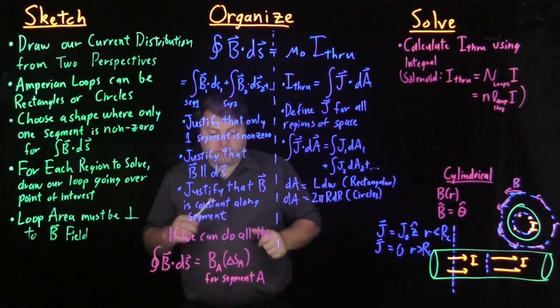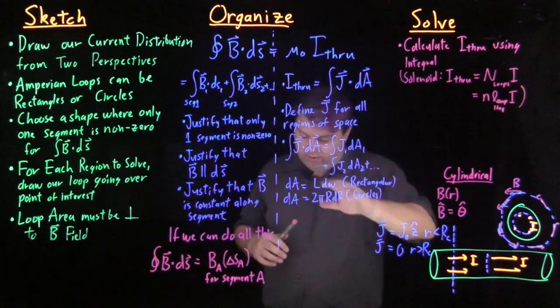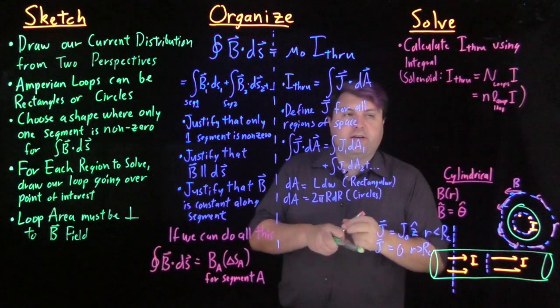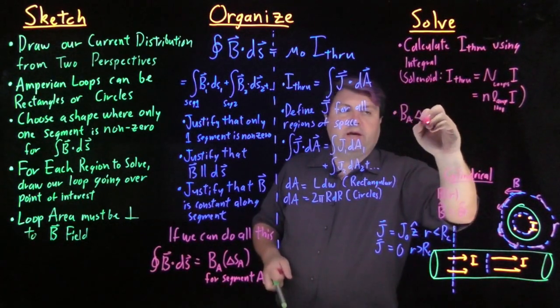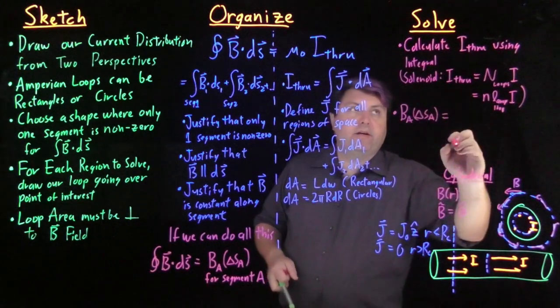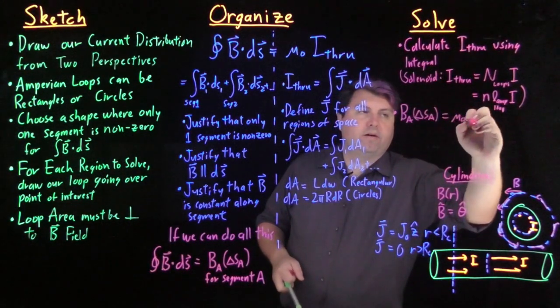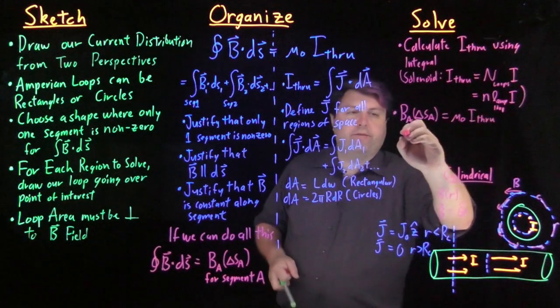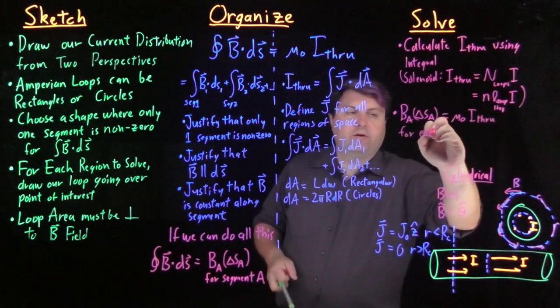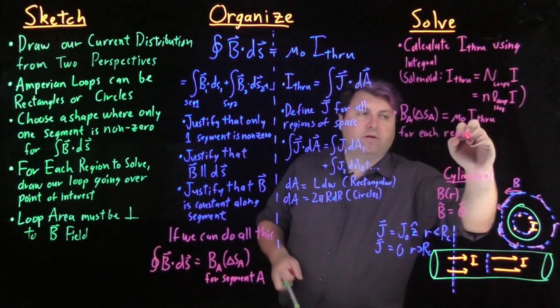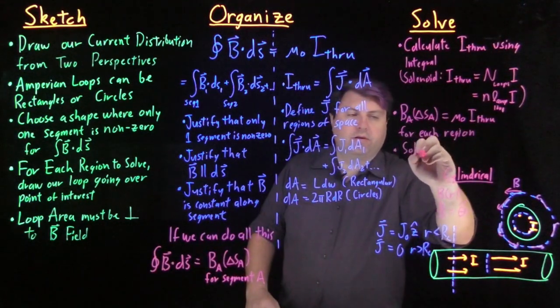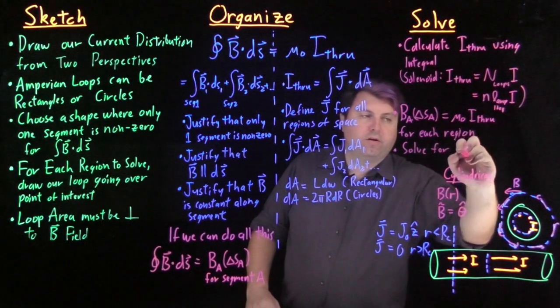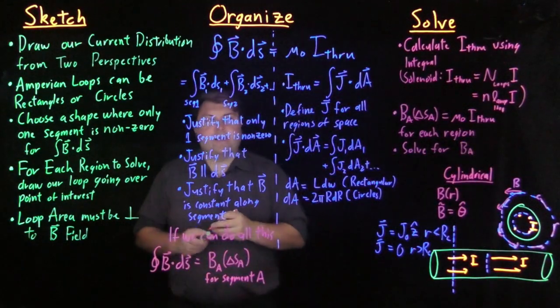So we've calculated the current through using the integral, and then we set BA delta SA equal to mu naught I through for each region, and then we solve for the magnetic field for that segment.